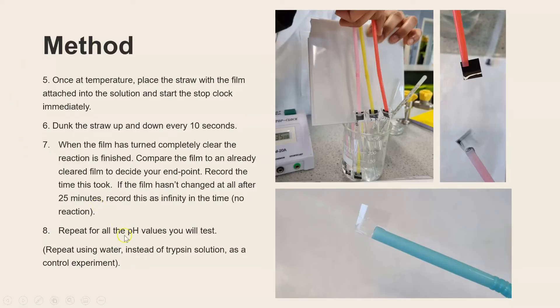So that will then need to be repeated for all of the pHs that you want to test. You should also repeat using water instead of trypsin in one test tube to use as a control experiment and that way you can prove it isn't anything about the temperature or the buffer itself, the pH alone, which is causing the change in color and therefore the gelatin to digest.